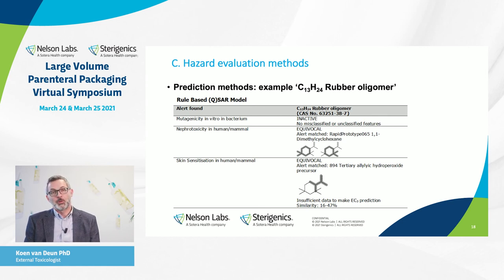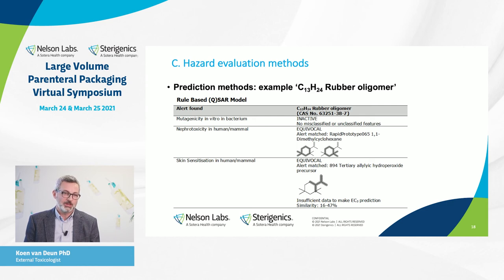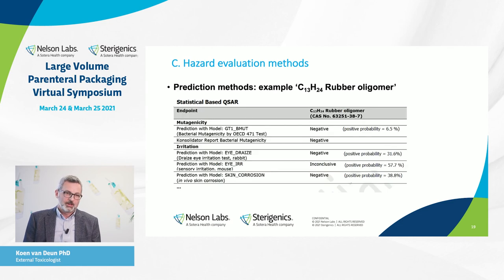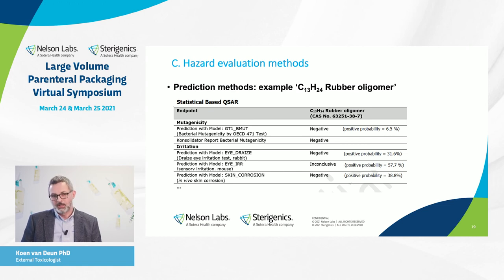Now let's go back to the oligomers, where there are no data. We use predictions. The first prediction shown is a rule-based model, which shows the oligomer is inactive or negative in a mutagenicity model in vitro in bacteria. It also shows other endpoints like nephrotoxicity and skin sensitization, which is useful to know. A second statistical-based QSAR model is also used, giving similar endpoints and providing a probability value — whether positive or negative. These two approaches are complementary and used in combination to come to a reliable prediction. The mutagenicity prediction is accepted instead of testing, but for other endpoints it is not always directly accepted.